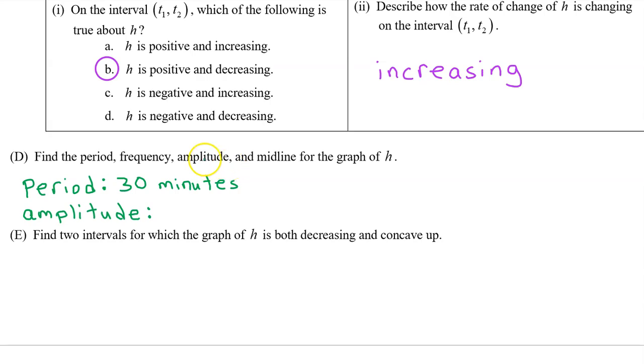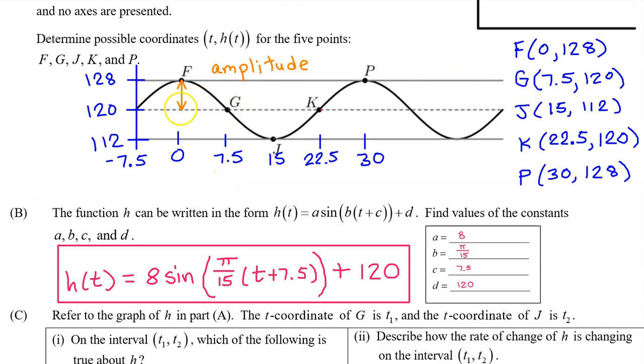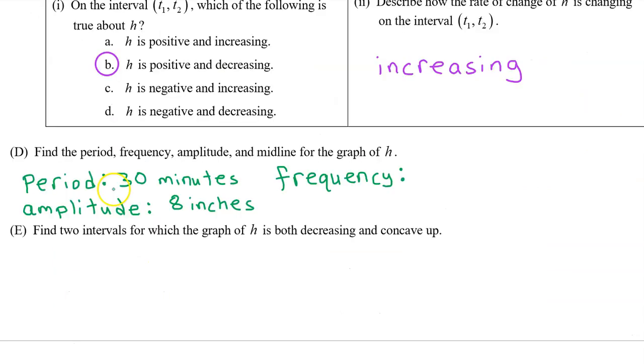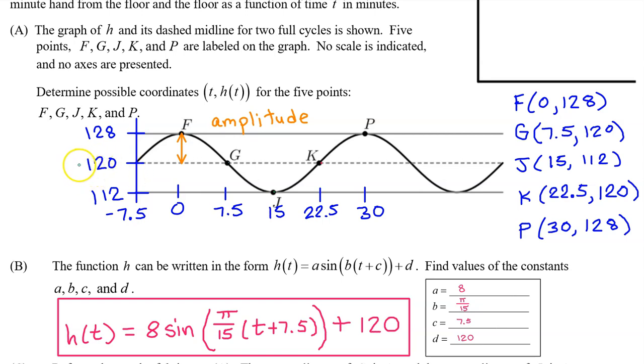What about the amplitude? The amplitude is the distance from the midline to the highest value. It is always positive, and in this case the amplitude is 8. I didn't mean to skip the frequency, which is the reciprocal of the period. Since the period is 30 minutes, the frequency is 1 over 30 cycles per minute. Now, what about the midline? The midline will be given as the equation of a horizontal line. So we will say y equals 120.